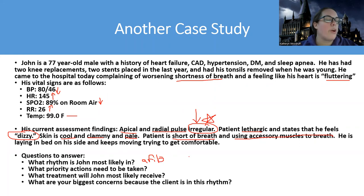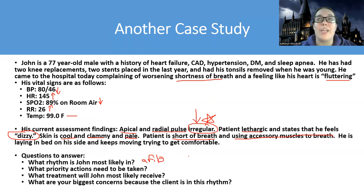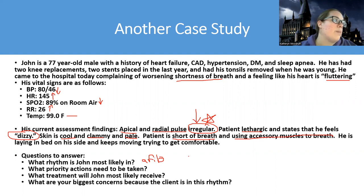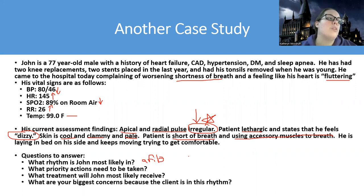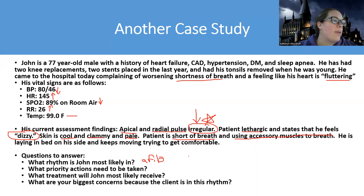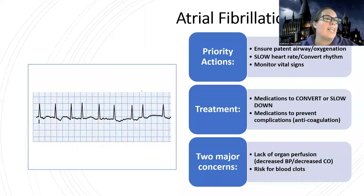It looks like he's probably in AFib. Priority actions for dysrhythmias include applying oxygen and getting a 12-lead EKG. I want to stabilize him, frequently monitor his vitals, apply oxygen since his oxygenation is down, confirm with a 12-lead EKG, contact the doctor, and get treatment started. We want to get that rhythm converted if possible; if not, get that heart rate down. We'll also do things to prevent clotting. Biggest concerns are low cardiac output, low blood pressure, poor perfusion, and blood clots.